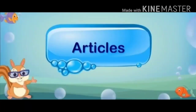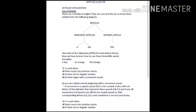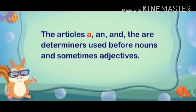Now students, you all know that there are only three articles in English. They are A, AN, and THE. Now let us know these articles through the following diagram which is given on this page. Articles: indefinite articles and definite article. Indefinite articles are of two types — A and AN. Definite article is only of one type, that is THE. Like most adjectives, articles come before nouns.